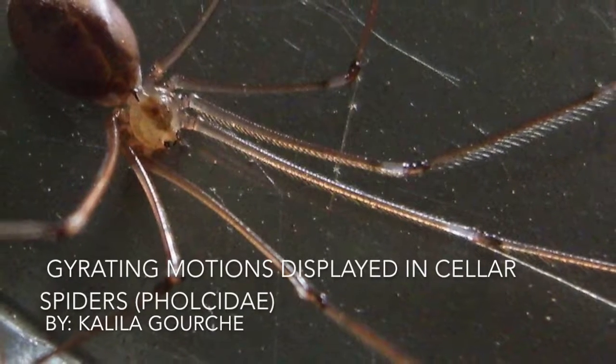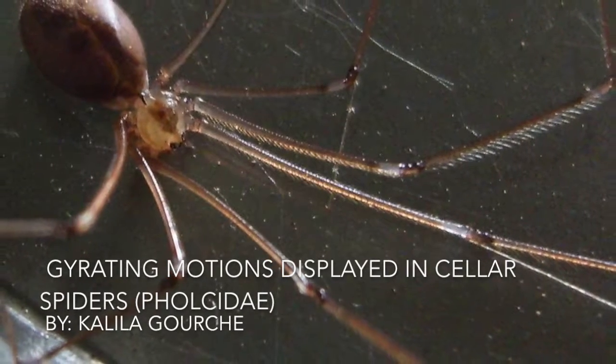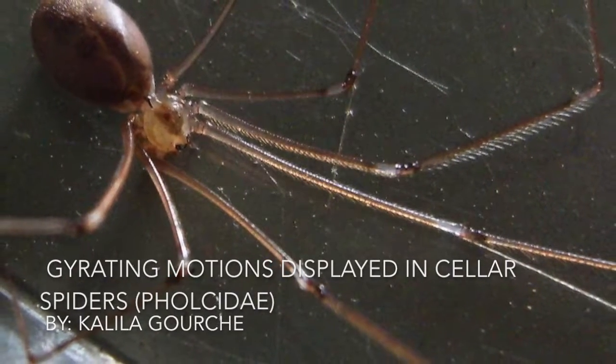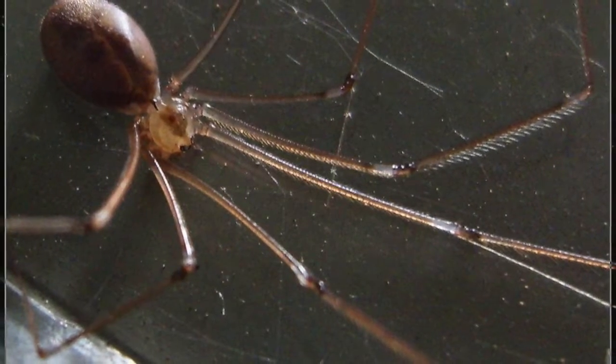In this presentation, I will discuss the gyrating motions displayed in cellar spiders. As you can see here, the spider bounces back and forth on its web at a very fast pace while making gyrating motions in the presence of the stimulus, which in this case is the pen.